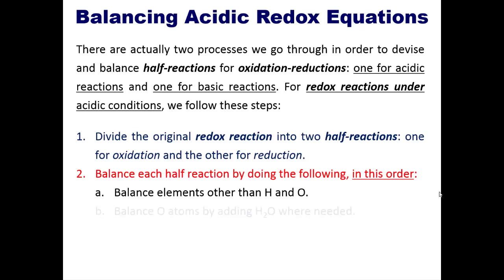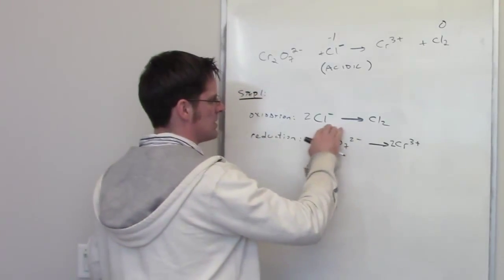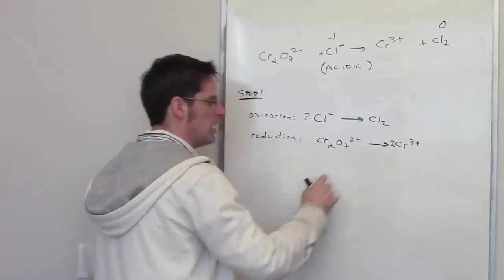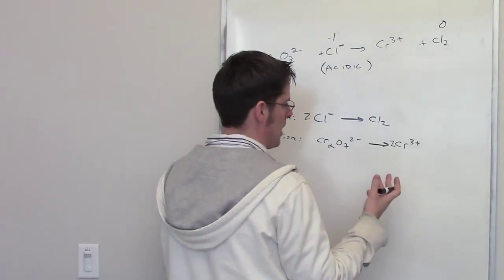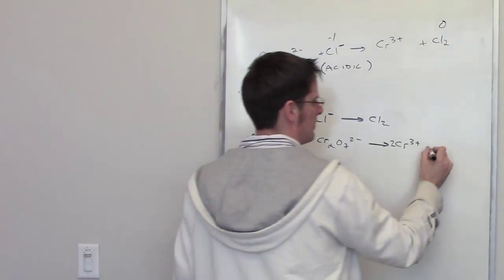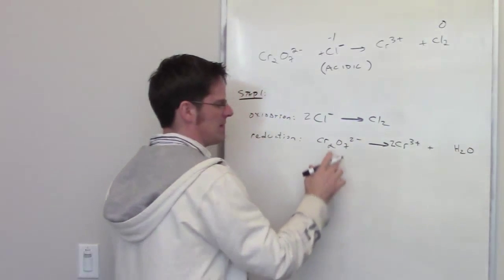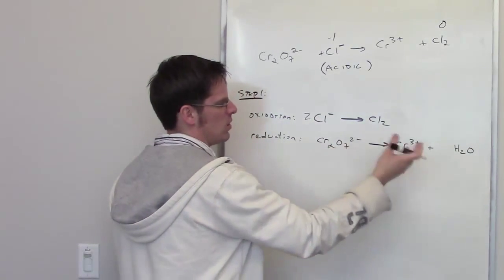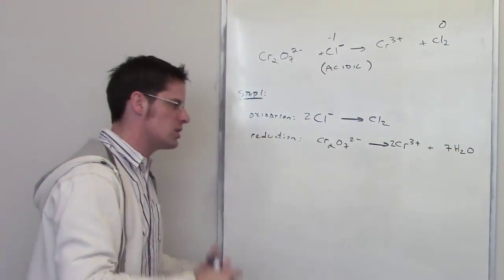The next step says balance oxygen atoms by adding H₂O where needed. The oxidation half-reaction has no oxygen atoms, but the reduction half-reaction does. The H₂O molecules need to go on the right side to balance the oxygens on the left. There are seven oxygens on the left, so I place a coefficient of 7 in front of H₂O. The oxygens are now balanced.